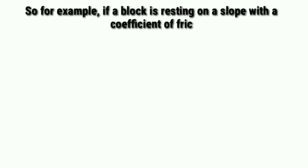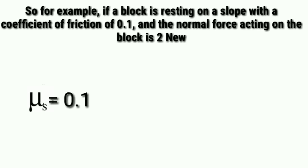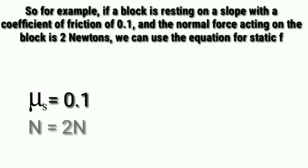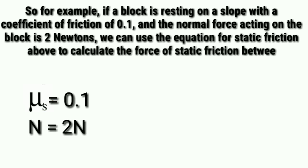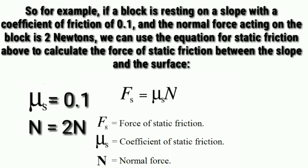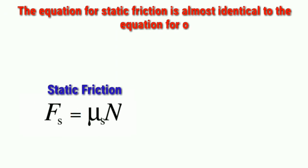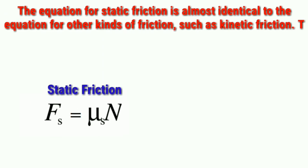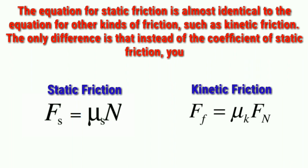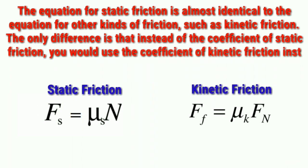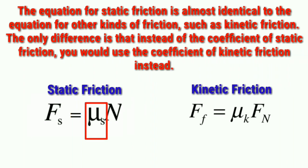For example, if a block is resting on a slope with a coefficient of friction of 0.1 and the normal force acting on the block is 2 newtons, we can use the equation for static friction to calculate the frictional force between the slope and the surface. The equation for static friction is almost identical to that for kinetic friction — the only difference is using the coefficient of kinetic friction instead.